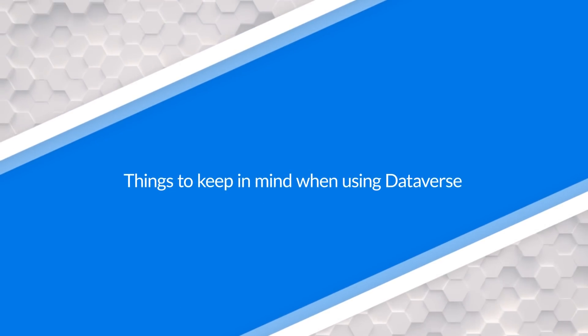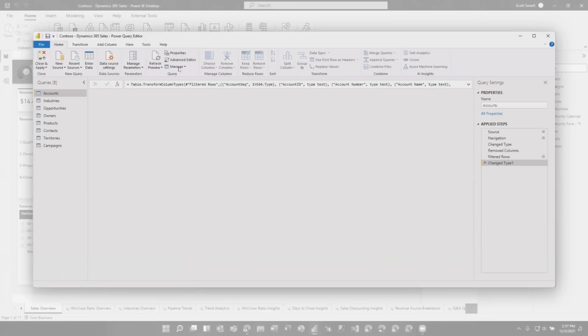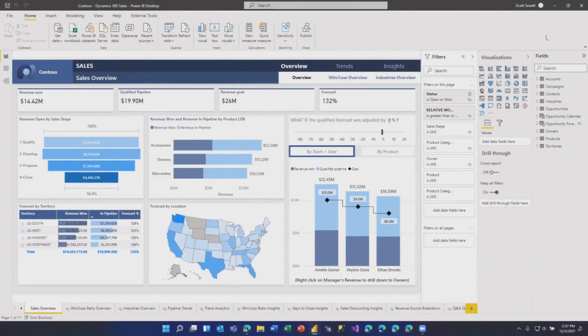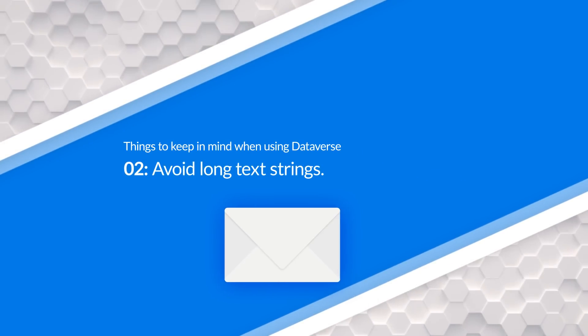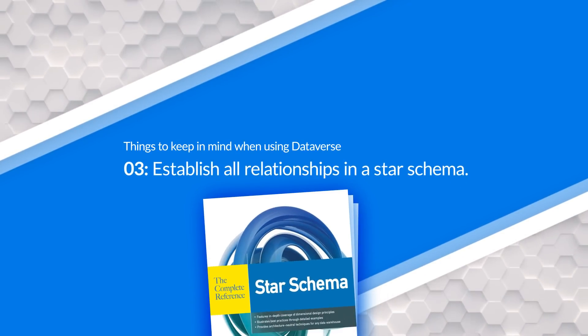Any limitations or pitfalls to call out? Dataverse, by default, because it has a lot of stuff pre-built, has a lot of fields. Some out-of-the-box entity tables can have upwards of a thousand fields — you don't want to pull all of those. My first step in a report is always to go into transform data and choose only the columns I want, leaving the rest behind. That's an important first step, whether you're doing Direct Query or import. Also, avoid pulling in long text strings like bodies of emails — those are not appropriate. The other thing: Dataverse has a schema built as a relational data model with all these interconnections, and that's not the model that works best for Power BI.